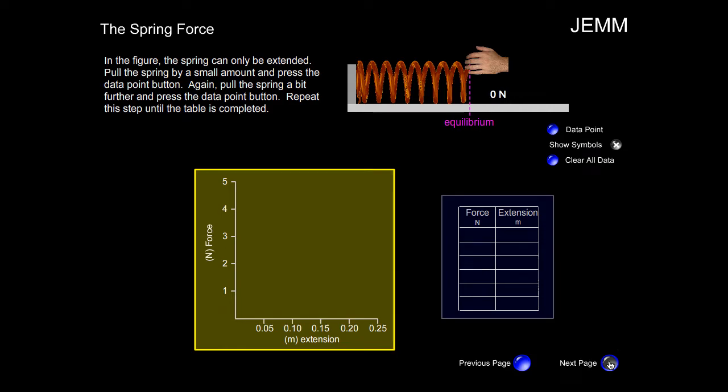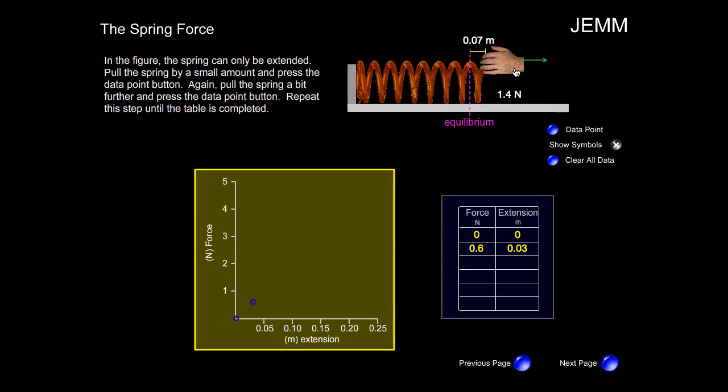Let's see what the relationship is. So, we'll begin with our initial data point, which states that for an extension of 0 meters, the force is 0 newtons. Now, let's extend this and plot that data point. Let's continue to extend it.